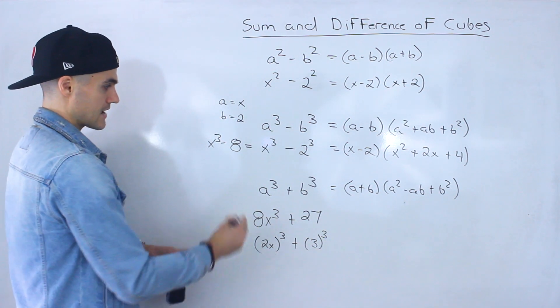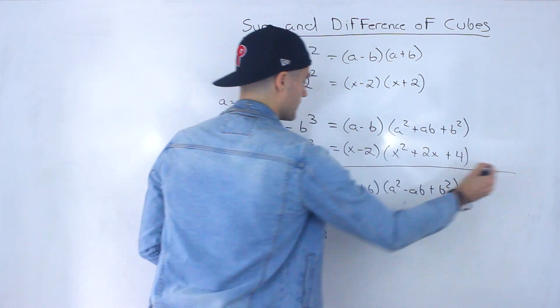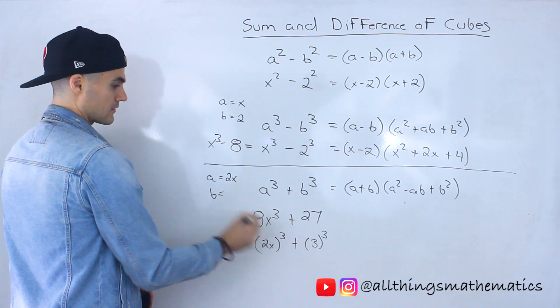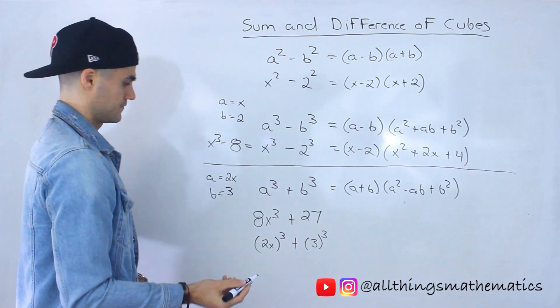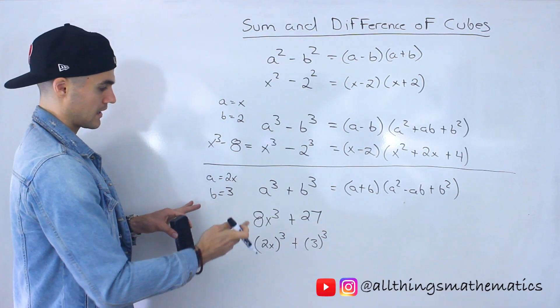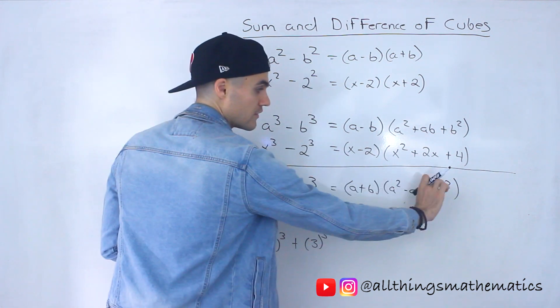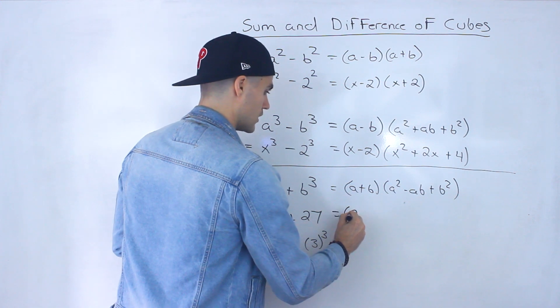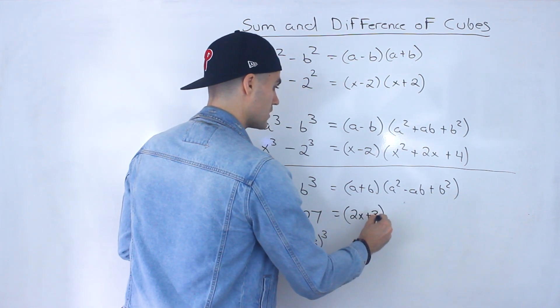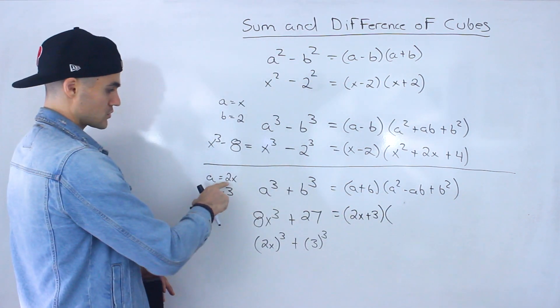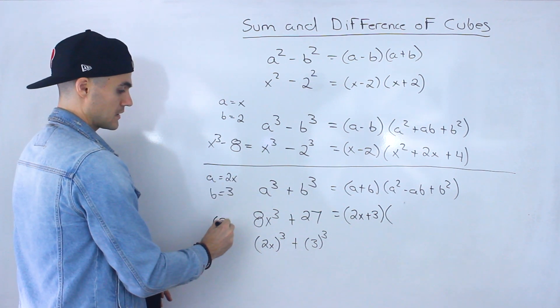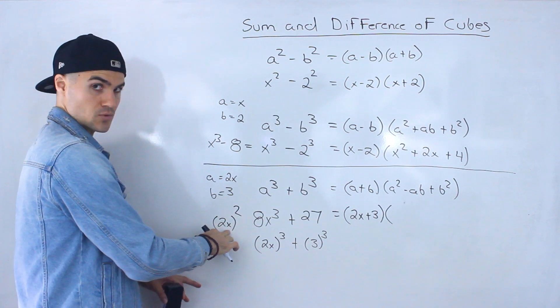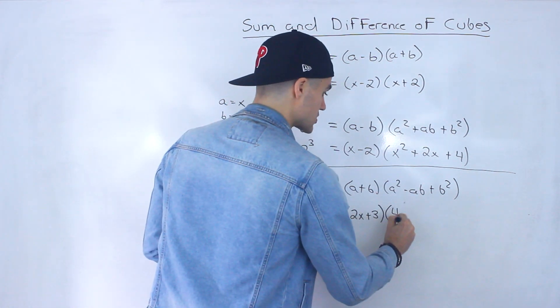And so notice that in this case, let me kind of split these two up, the a value in this case is the 2x, and then the b value is the 3. And so now all we do is we plug in these for this formula, for the sum of cubes formula. So we would end up with 2x plus 3, and then a squared, so it would be 2x squared. Now remember that 2x would be in brackets when you square that. So you got to square the 2 and square the x, so you'd end up with 4x squared over here.